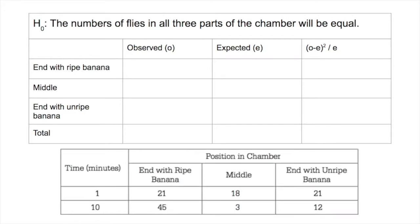So here is the table of our data and remember we're looking at time 10 minutes. We're going to completely ignore that one minute row. So after 10 minutes the end with the ripe banana had 45 flies, the middle had 3 flies, and the end with the unripe banana had 12, and the total is 60.